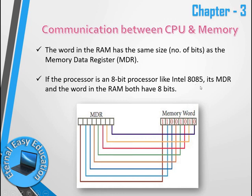For example, the Intel 8085 is an 8-bit processor, so its data register is 8 bits. This represents the 8-bit architecture. Main memory word size matches the processor's bit width. This is the communication process between CPU and memory.